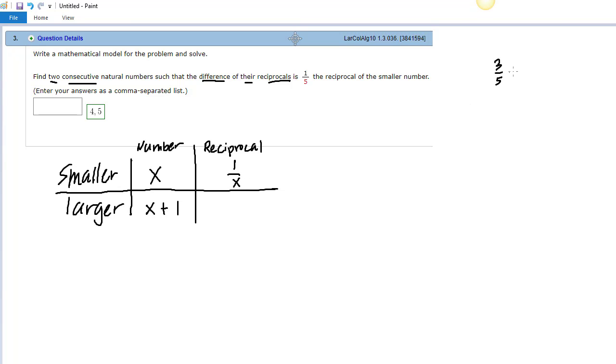A simple example with fractions would be 3 fifths becomes 5 thirds. You flip it over. When you flip, if you have x that's the same as x over 1, so when you flip it you get 1 over x. By the same way, the reciprocal of the larger number is 1 over x plus 1.